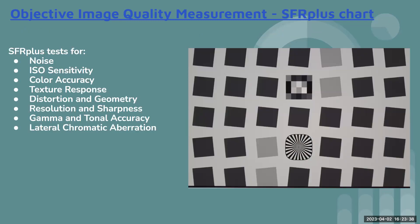The next chart is the SFR plus chart, which can be used for different purposes. It is available in two variants: 5x7 and 5x9 — meaning five boxes vertical and seven or nine boxes horizontal. If your camera has a big FOV, you can go for 5x9. For this example, I have taken the 5x7 image to explain the use case of the SFR plus chart.